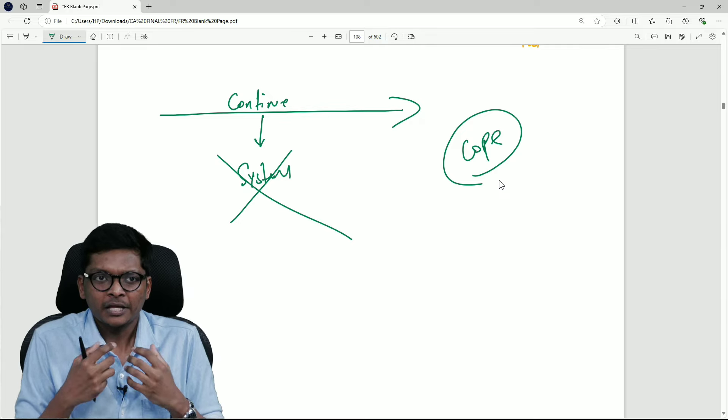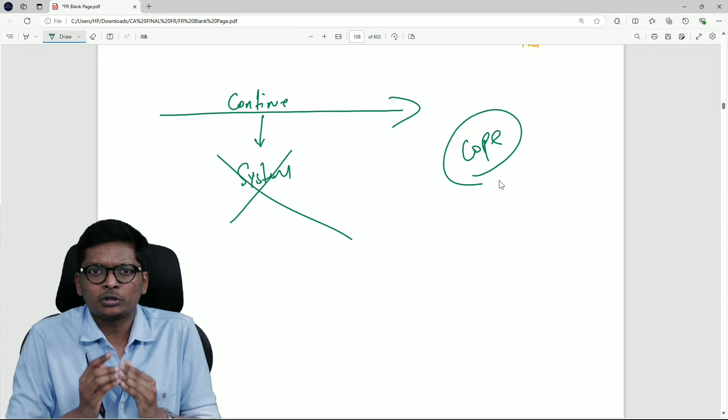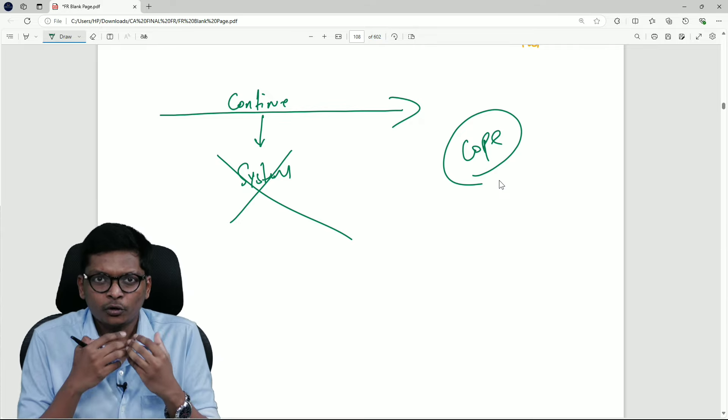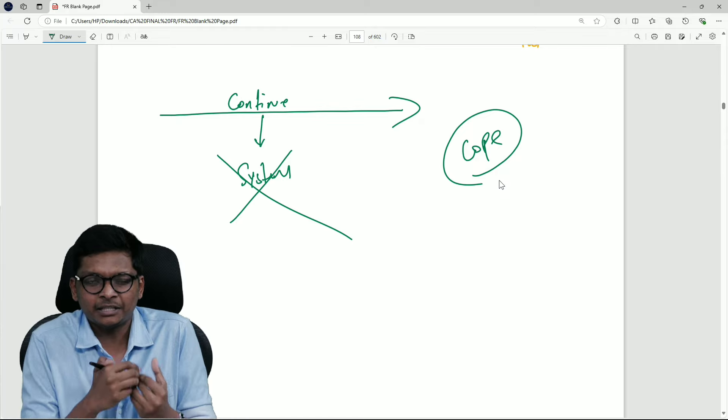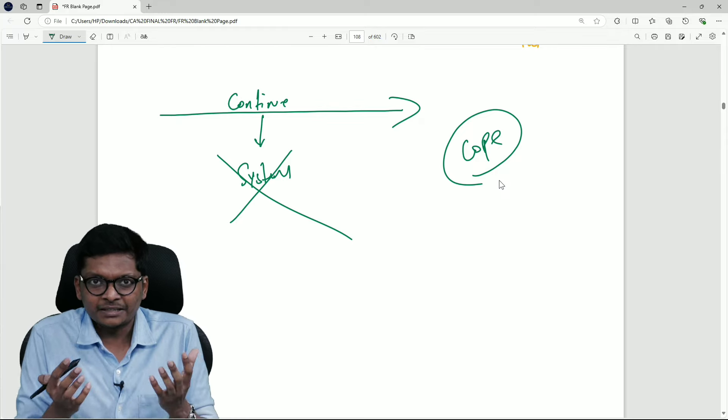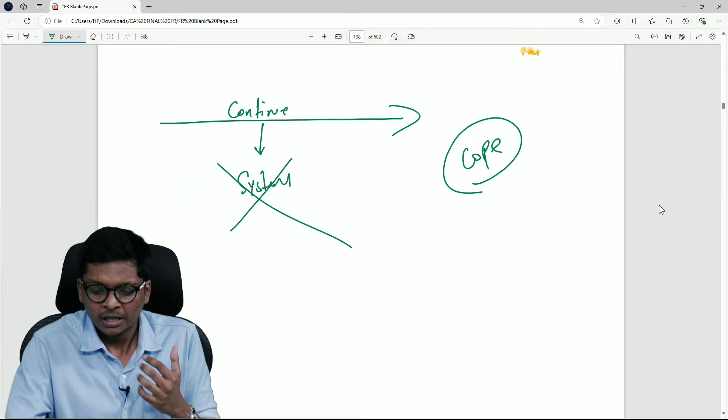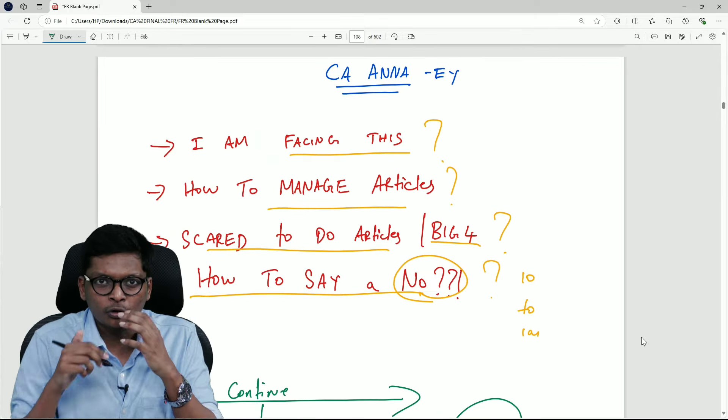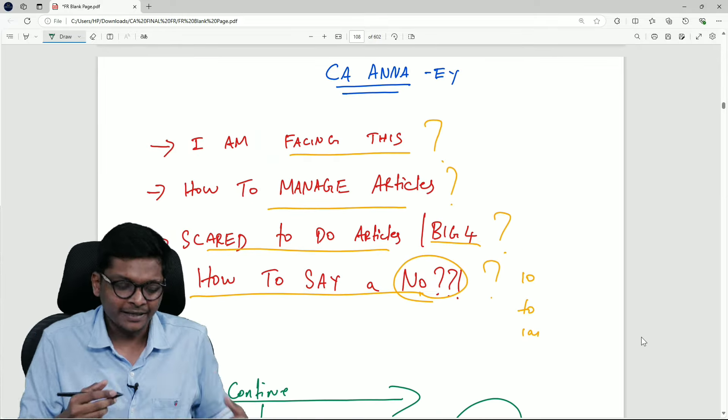For example, if you are interested to work 10 to 10, you can work. If you are not interested, maybe in the tax audit season you can work, but otherwise if you are being forced to work, if you do not like your articles, if you are not happy, how do you manage all of this?